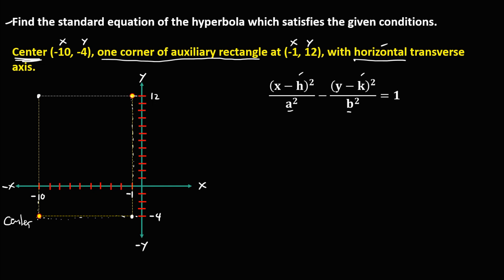Since this hyperbola is horizontal, the vertex is in the horizontal position. From the graph, the vertex is in the horizontal position relative to the center, and the other point is the co-vertex. To solve for h and k, from the center, h is negative 10 and k is negative 4.